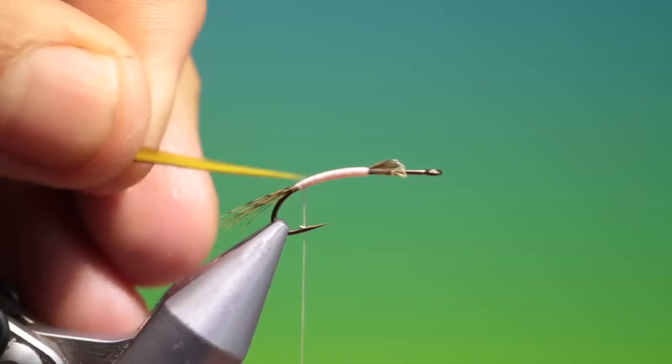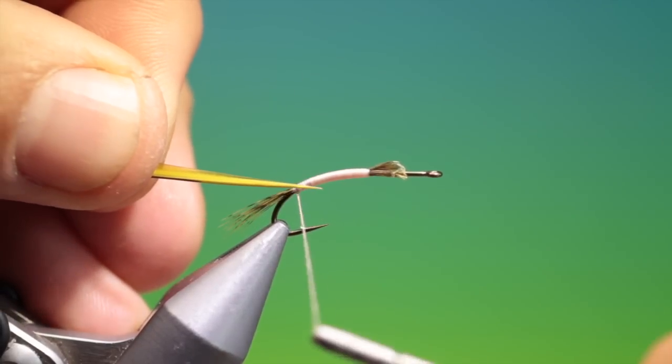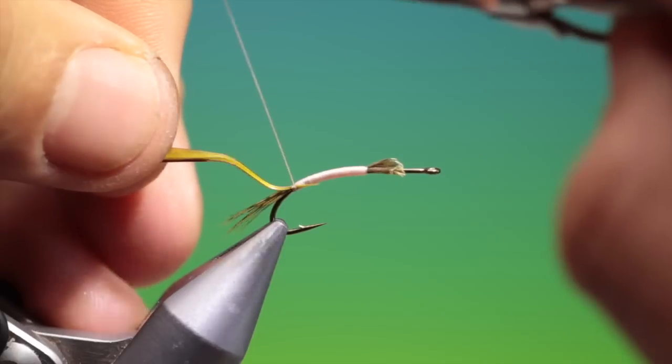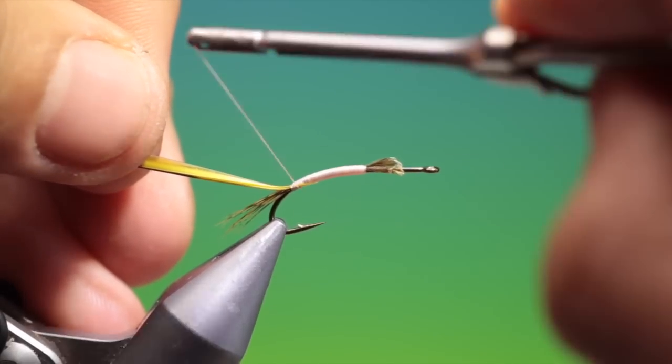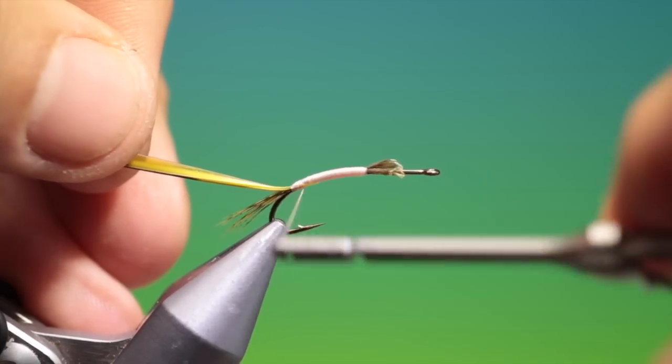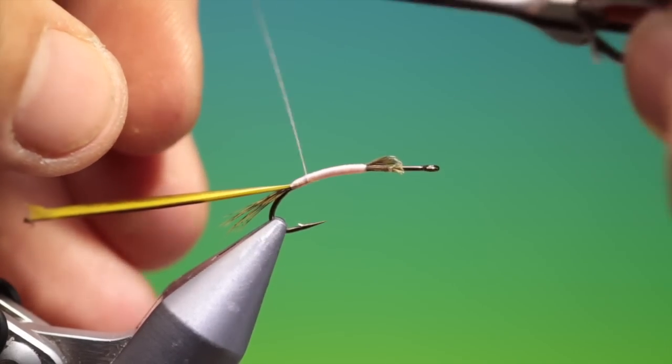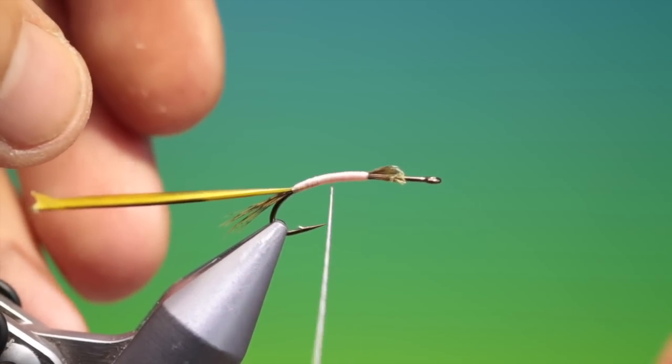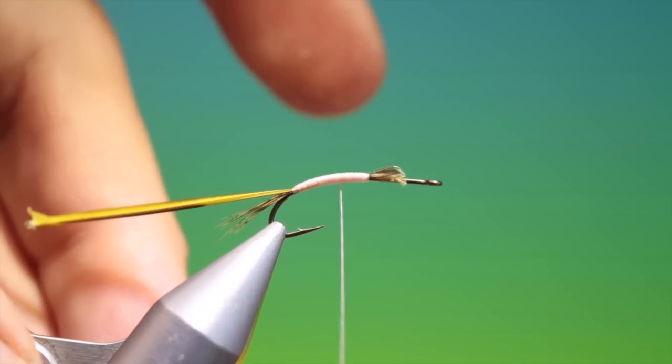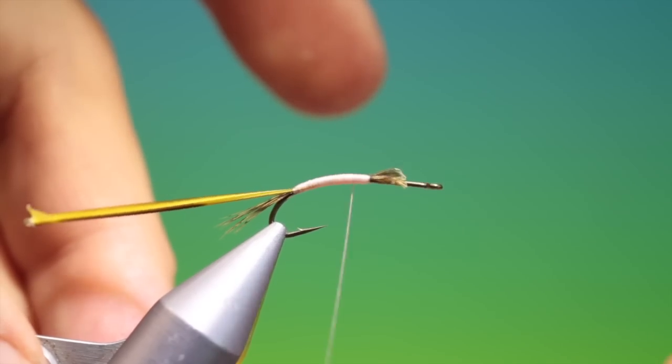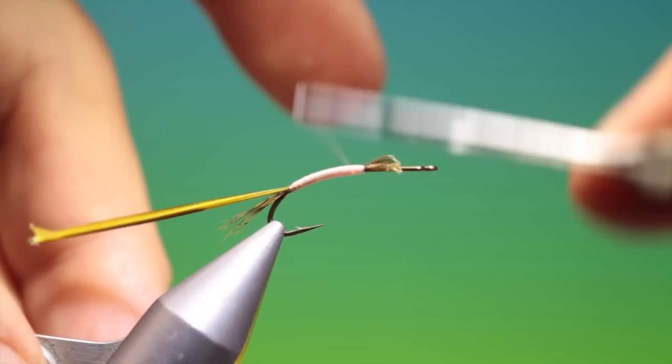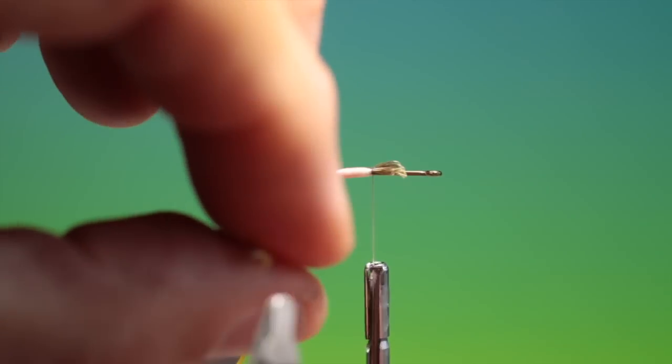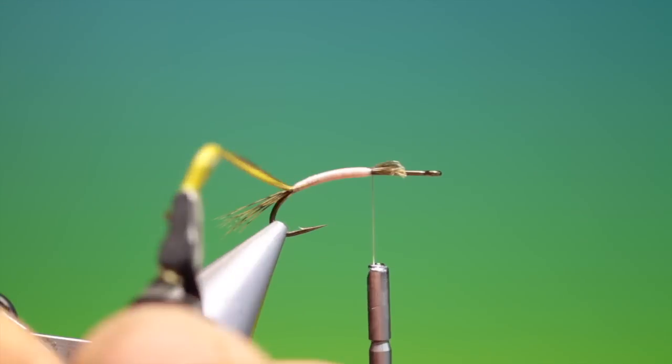And what we need is a Turkey Biot olive. Just tie this in by the point. And go back up, keeping the other body again as smooth as possible as we go back up. There we are. Hackle plier on the Biot.